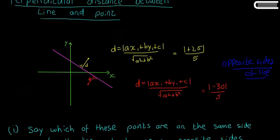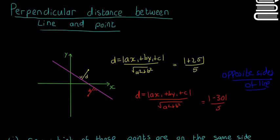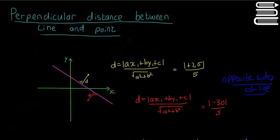These are the kinds of questions they could ask you on perpendicular distance — not just finding the distance, but determining which side of the line two or three points are on. Hopefully that all made sense. It's always about the plus or the minus. We'll see you next time, where we'll look at probably the most difficult example you're going to see on this type of question.